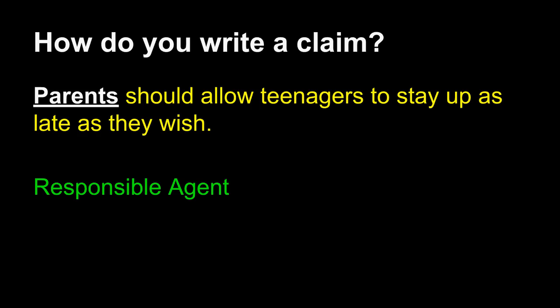First, we start with the responsible agent. "Parents" is the responsible agent here. That is the person or organization that can actually do an action that you are calling for. Do not start your claim sentence with "there." Do not start your claim sentence with "I think." If you look at your claim sentence right now and you see either of those beginning the sentence, stop — you need a responsible agent. Always start your sentence focusing on a person or organization that can do something. In this case, you're asking parents to do something. That's your responsible agent.